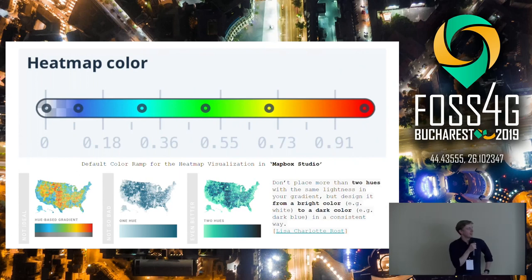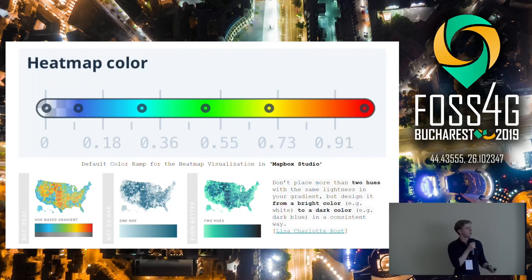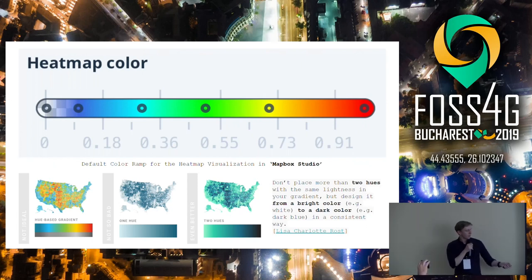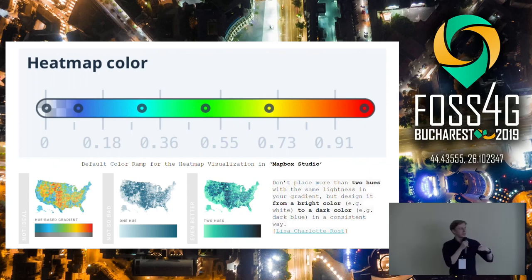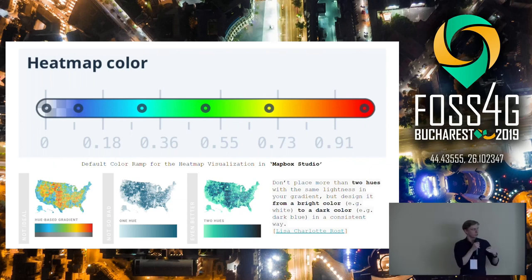About color: just do not use the rainbow color ramp — it's really not a good idea. I'm attaching a link to a great article by Lisa Charlotte-Rost about hue-based gradients. The main idea is that the human eye is not very good at identifying the middle regions between the main colors — red, green, and blue — so this color ramp doesn't work well for perception. And of course, it's not good for people with color blindness. It's much more recommended to use one hue or even two hues to show divergence or sequential data distribution.